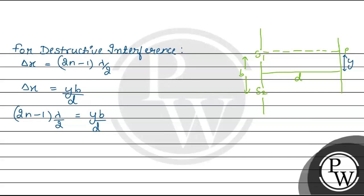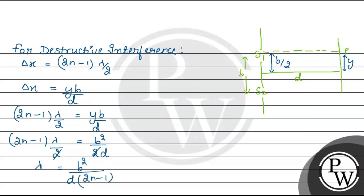y हमारे पास point P का center से distance है, b हमारे पास slits separation है, और d हमारे पास slits और screen के बीच का separation है. So यहां से हम बोल सकते हैं: (2N−1) × λ/2 = y × b / d. अब यहां पर अगर point P है, P मतलब यह जो हमारे पास distance y है वो b/2 के equal होगा. So (2N−1) × λ/2 = (b/2) × b / d = b² / 2d. 2 से 2 cancel होगा, तो lambda की value आएगी b² / (d × (2N−1)). यह जो wavelength होगी lambda यह सब इस point पे से missing होगी क्योंकि यहां पर destructive interference हो रहा है.